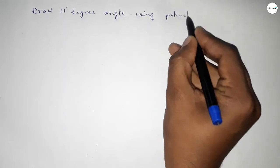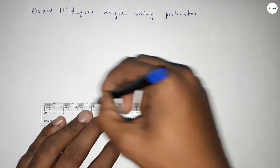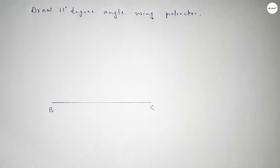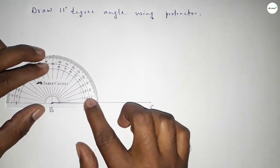So constructing 11 degree angle, let's start the video. First of all, we have to draw here a line of any length, taking here point B and here point C. Now putting the protractor on point B.